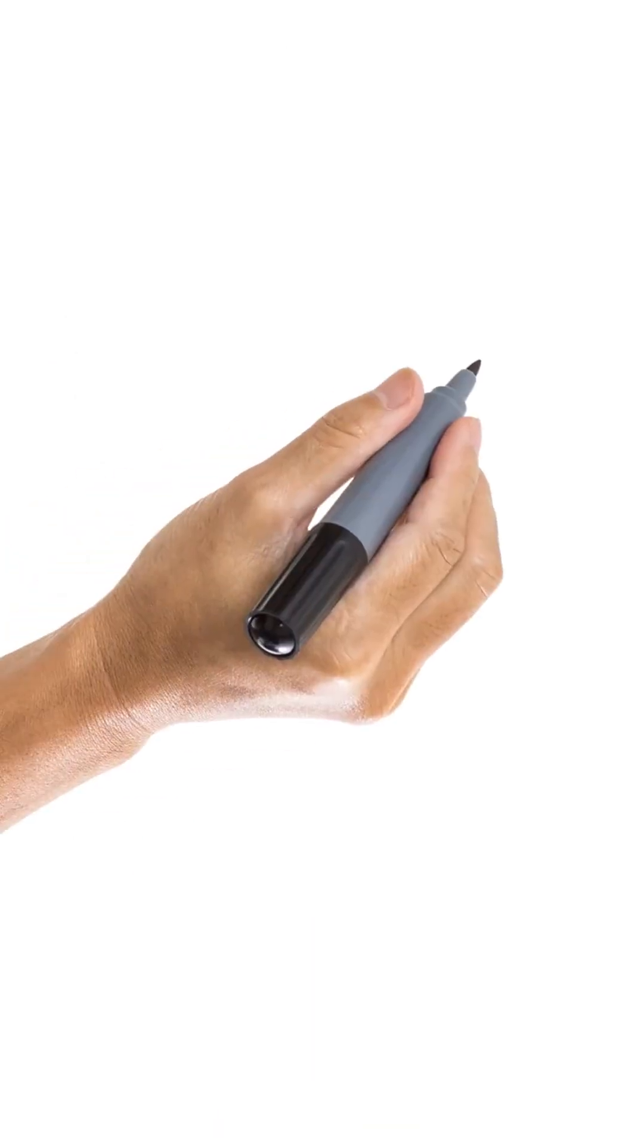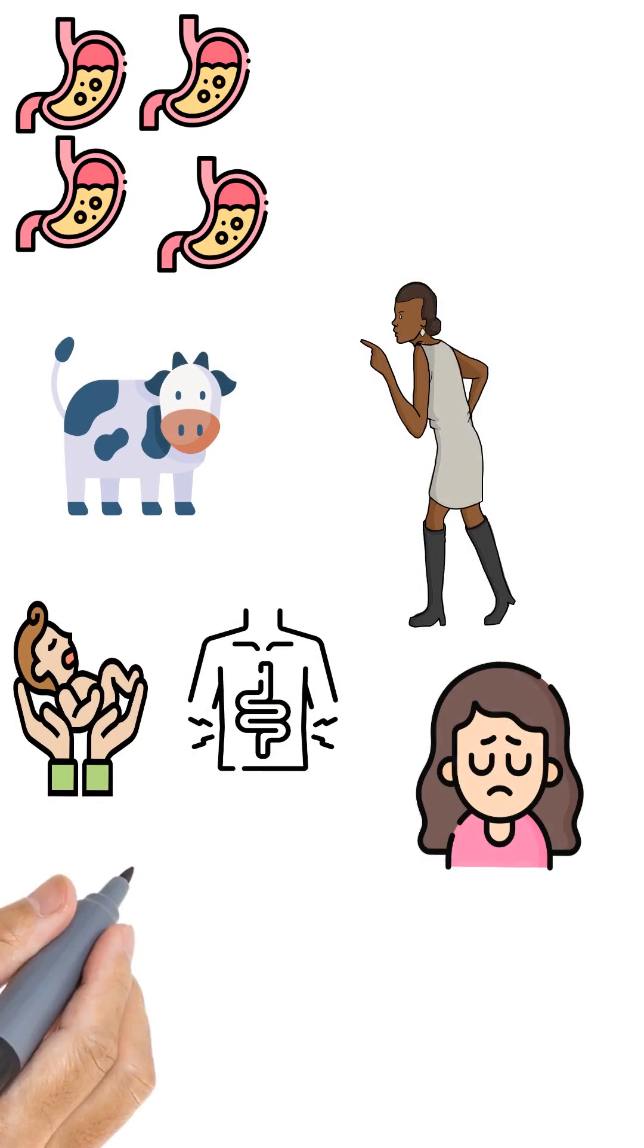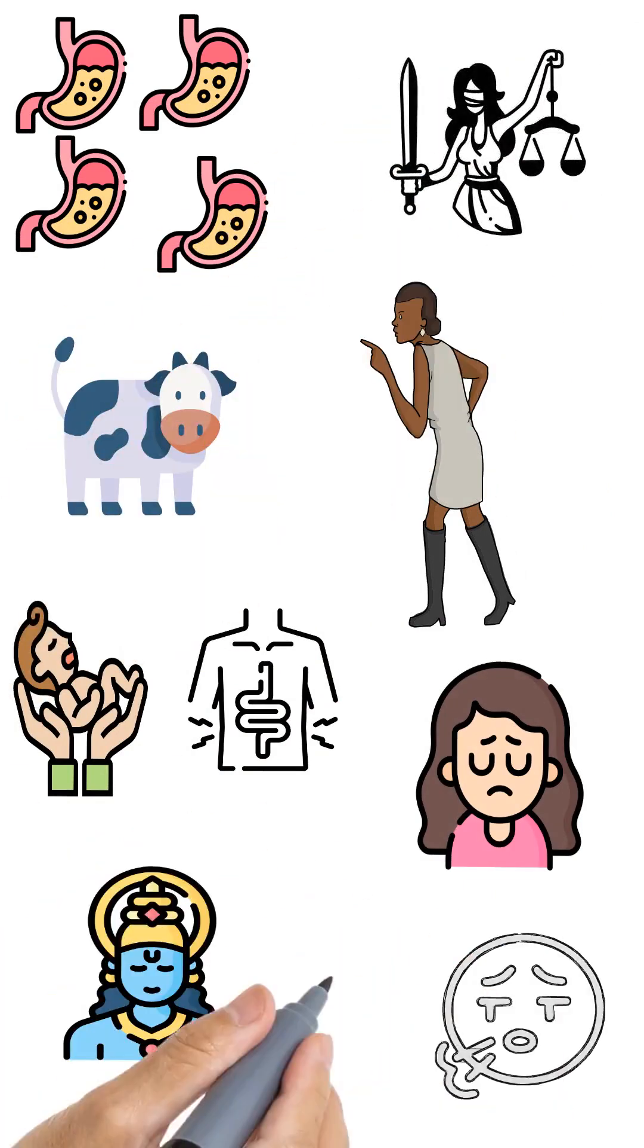You will ask why animal like cow have four stomachs and I am one with a single one. Now, this is not fair. I am just one, think. No!